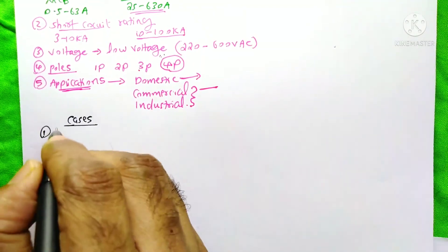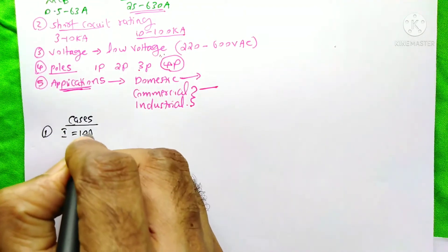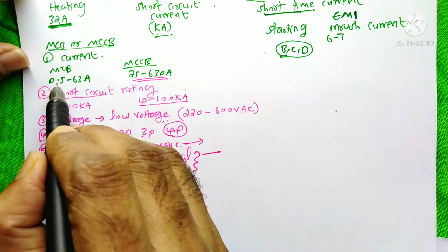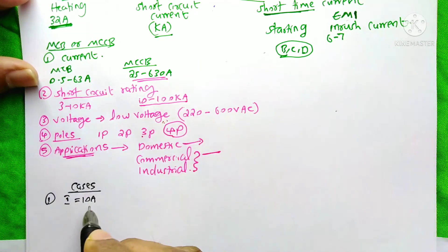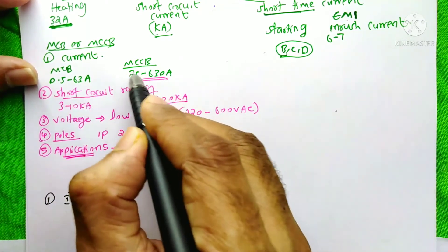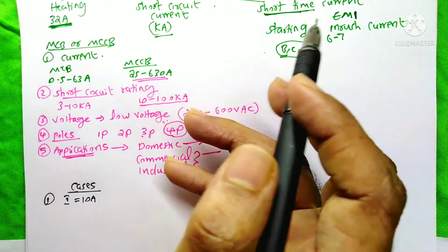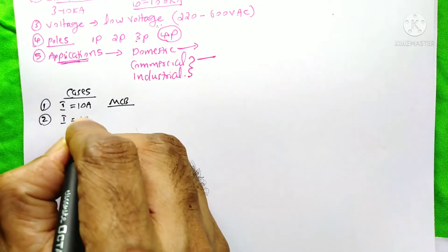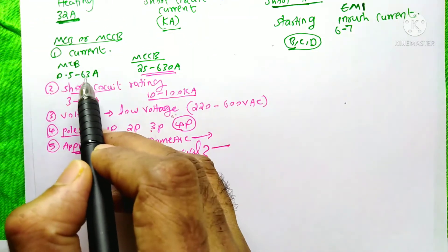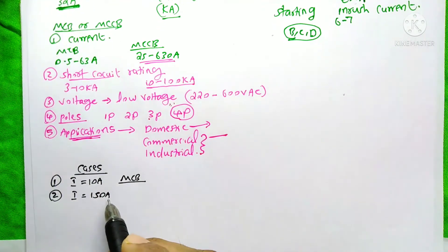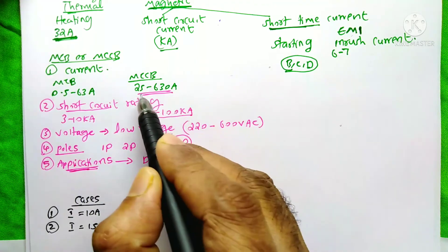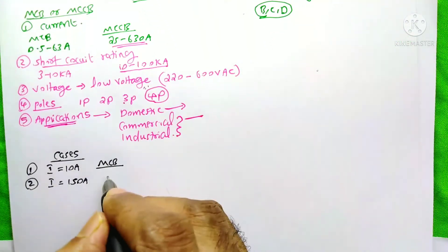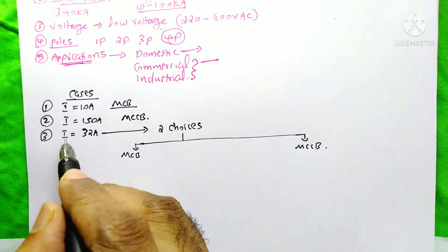Let's discuss some different cases. If the circuit current is 10 amperes: the MCB is available from 0.5 to 63 amps, so 10 amperes falls within that range, but there is no 10-ampere MCCB available — so we are forced to select an MCB. The second case is when the current is 150 amperes: the MCB is only available up to 63 amps, but 150 amperes falls within the MCCB range of 25 to 630 amps, so we are forced to select an MCCB.